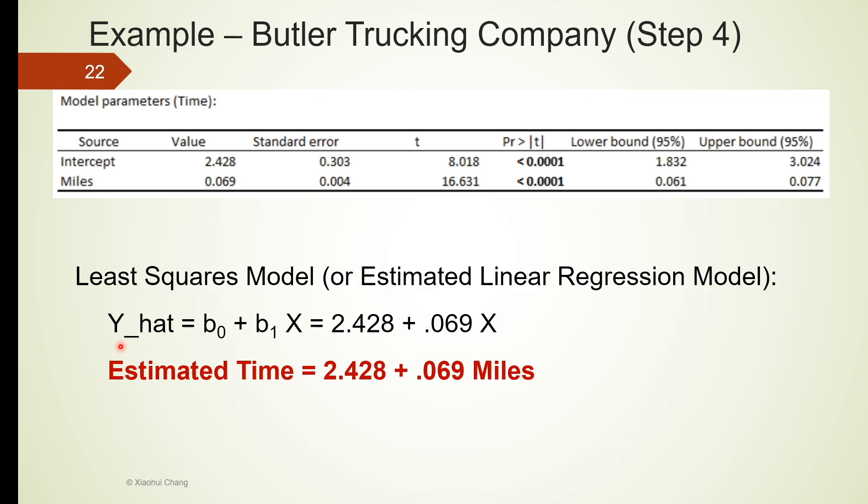Remember, y is the time. But the estimated linear regression model does not imply that y is always the sum of 2.428 and 0.069 multiplied by miles. It is only estimated to be this way. So that's why we write y hat. That's just a way of saying estimated y. So let's repeat it: y hat is the estimate of y, B0 is the estimated beta 0, and B1 is the estimated beta 1.